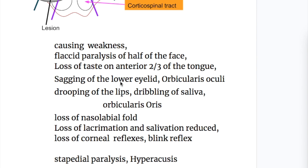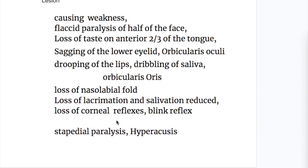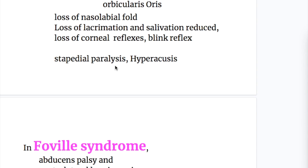There is sagging of the lower eyelid due to paralysis of orbicularis oculi, drooping of the lips, and dribbling of saliva due to paralysis of orbicularis oris muscle. There is loss of the nasolabial fold and the patient is unable to whistle. There is also loss of lacrimation and salivation, loss of corneal reflex and blink reflex, because the facial nerve forms the efferent limb of the reflex. Facial paralysis causes stapedial paralysis because it supplies the stapedius muscle in the inner ear, and paralysis of the stapedius causes hyperacusis.